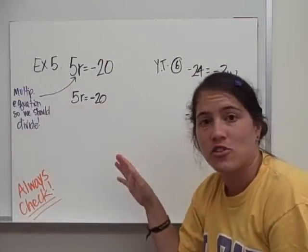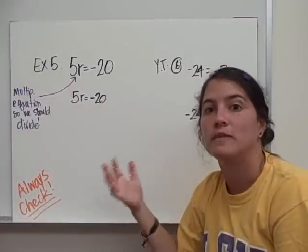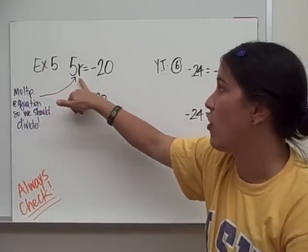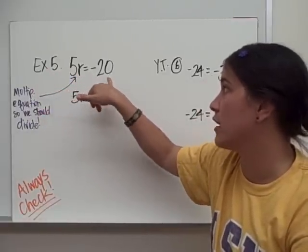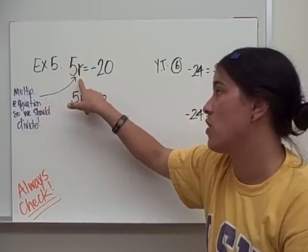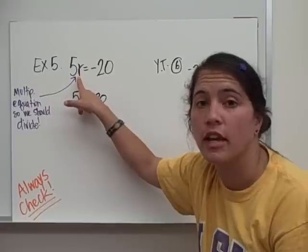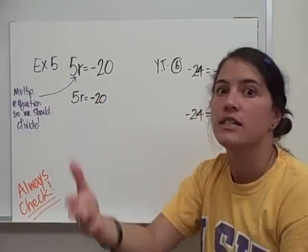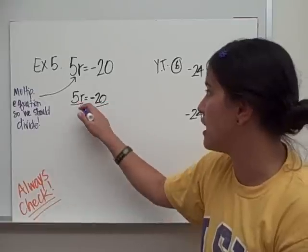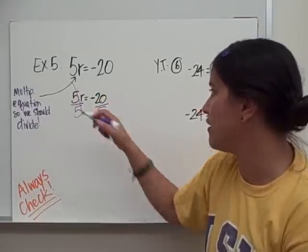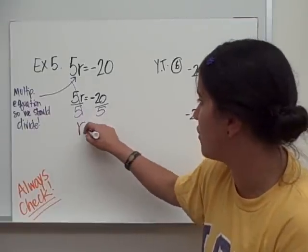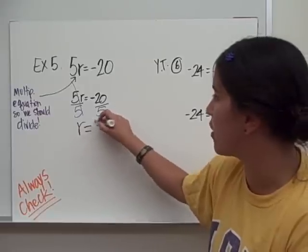Those were examples about addition and subtraction. Now let's move on to multiplication and division. Example 5: 5r equals negative 20. This is a multiplication equation — it really means 5 times r. So in order to undo multiplication, we use division. We are going to divide both sides by 5. When you divide both sides by 5, r equals negative 4.